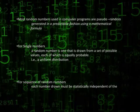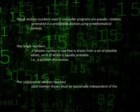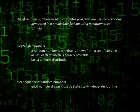When discussing single numbers, a random number is one that is drawn from a set of possible values, each of which is equally probable (uniform distribution). When discussing a sequence of numbers, each number drawn must be statistically independent of others.